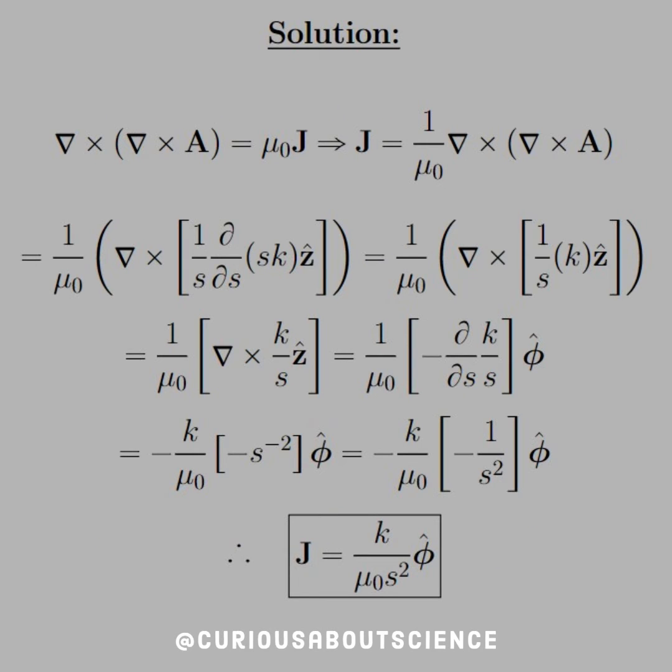So you see we just need to do a couple cross products, which can get messy, so be aware of that. Alright, so algebraically solving this for the current density J, we get 1 over mu naught del cross del cross A.